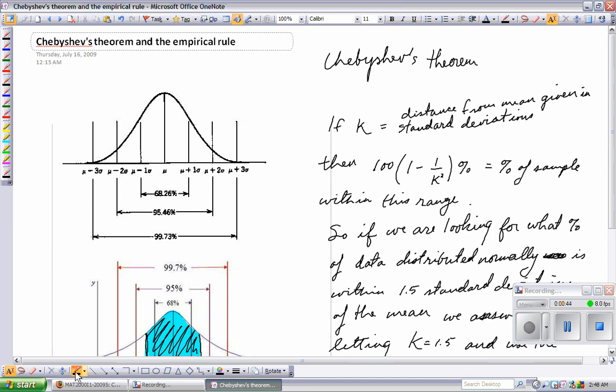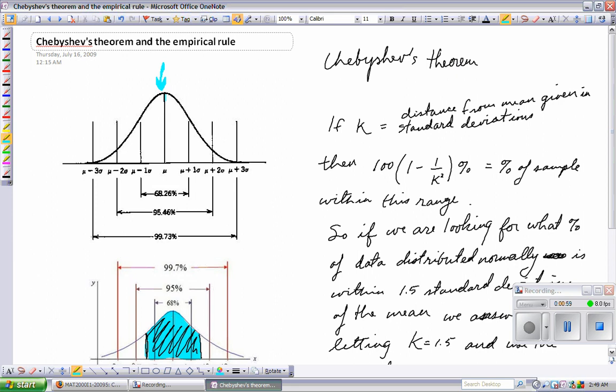If something is normally distributed, here's the mean right here. The mean is right in the center. One standard deviation away from the mean in either direction will contain 68.3% of the sample if something is normally distributed.